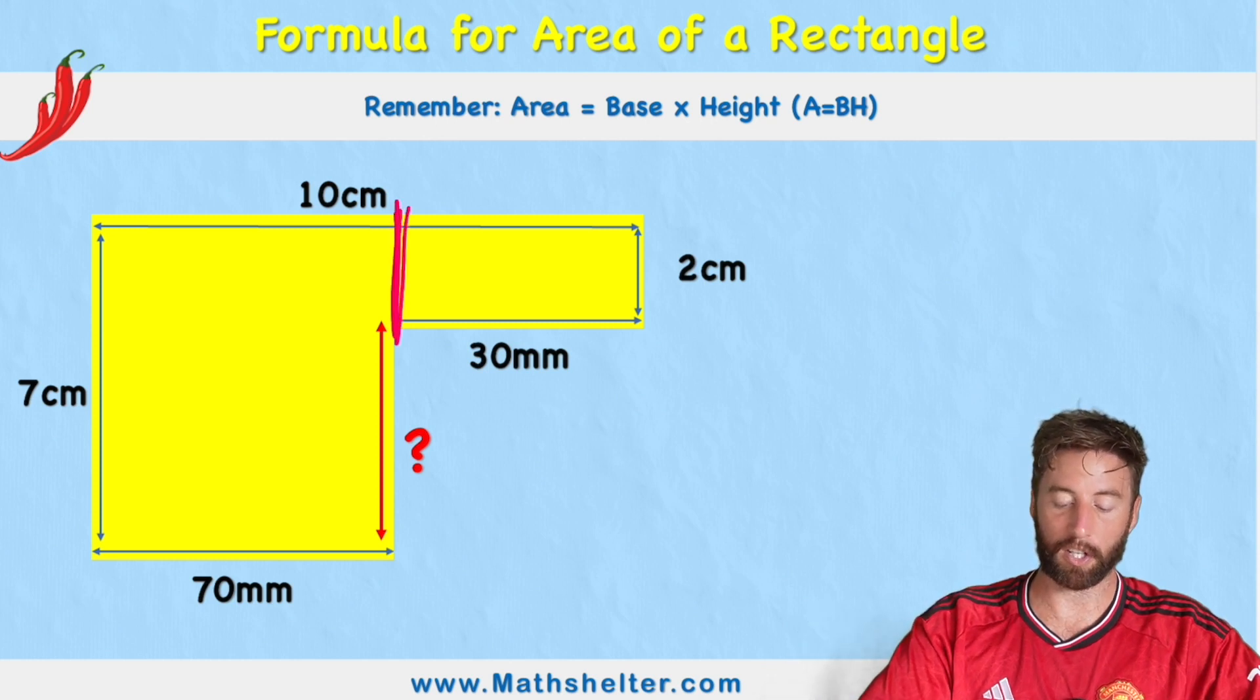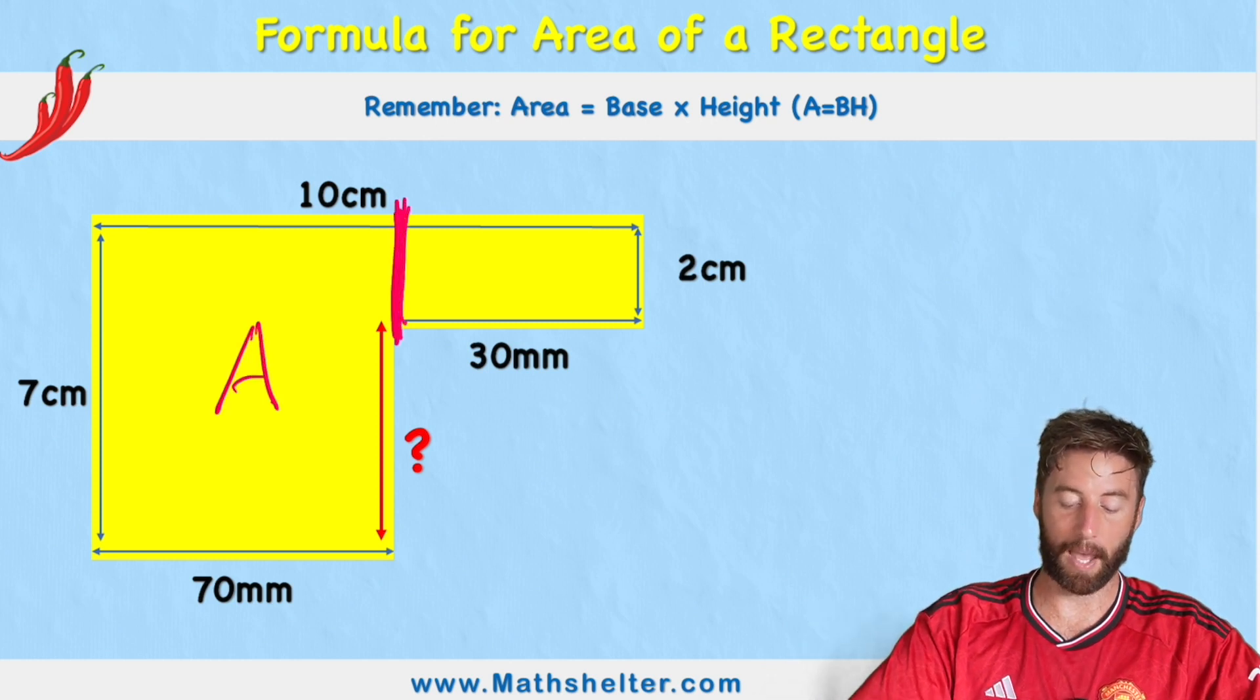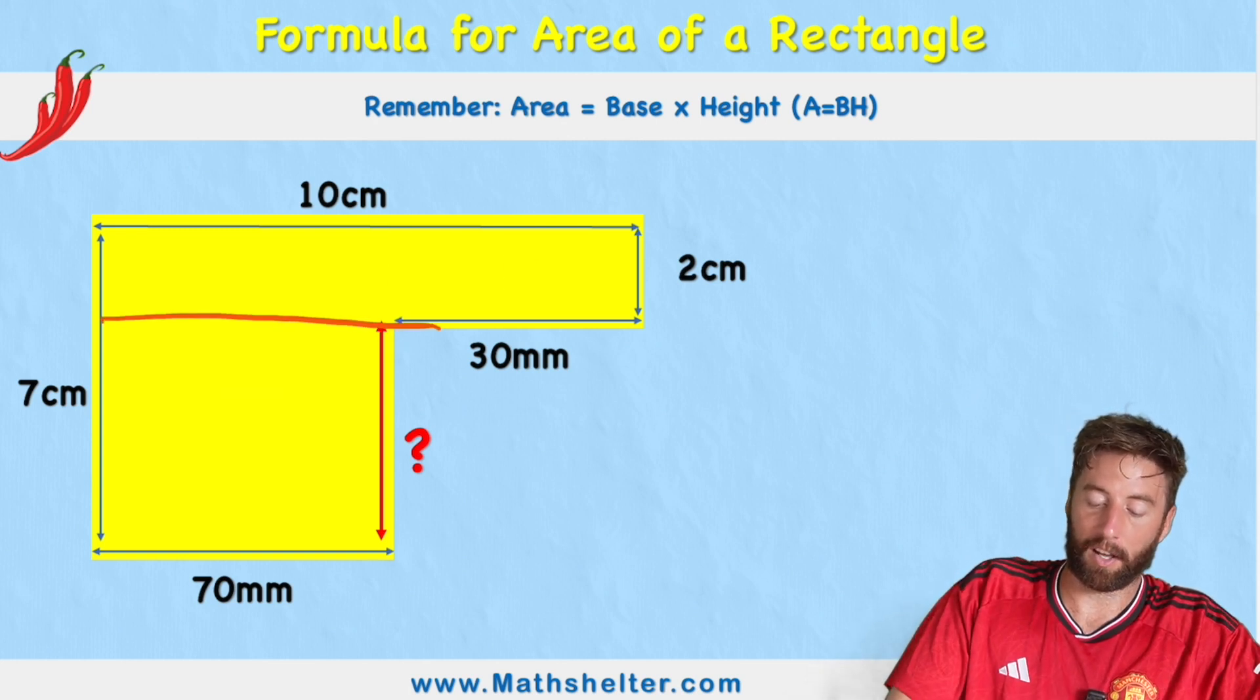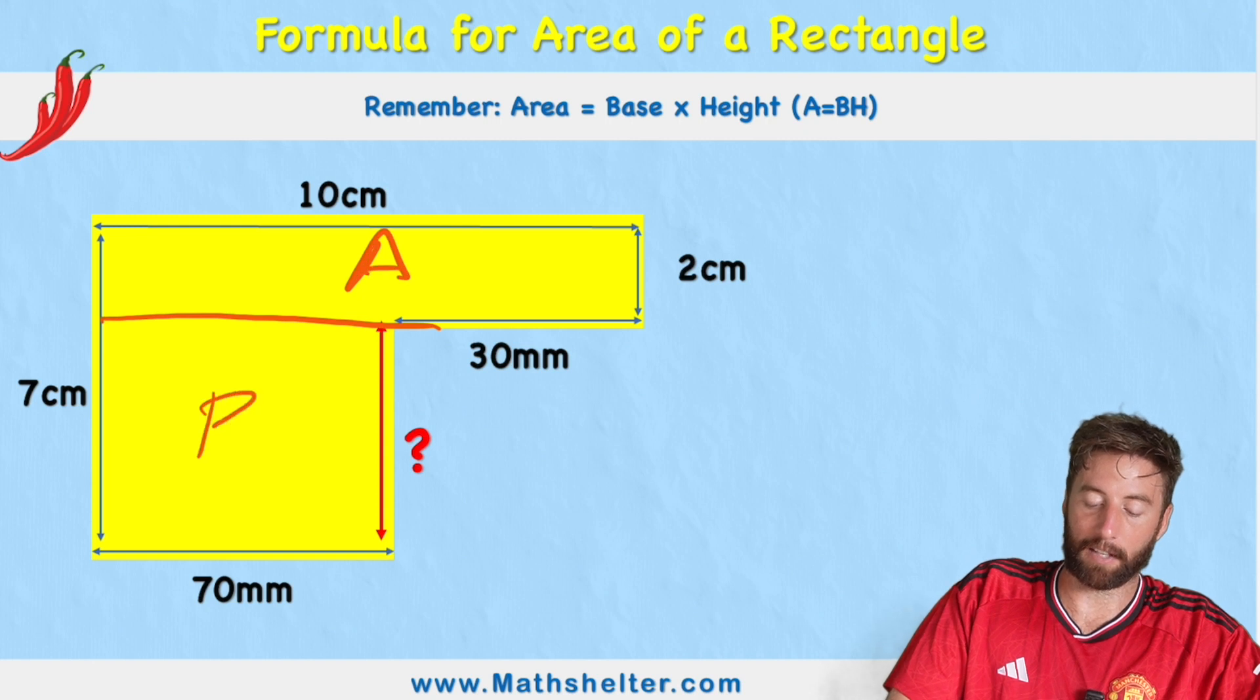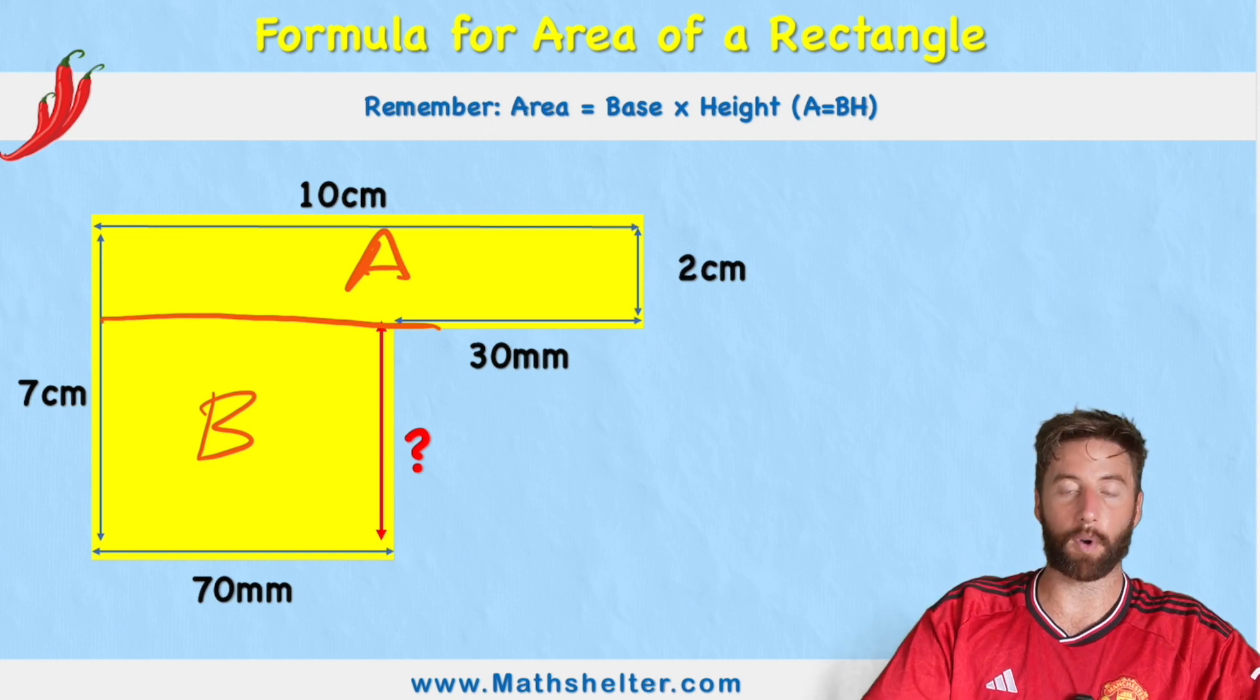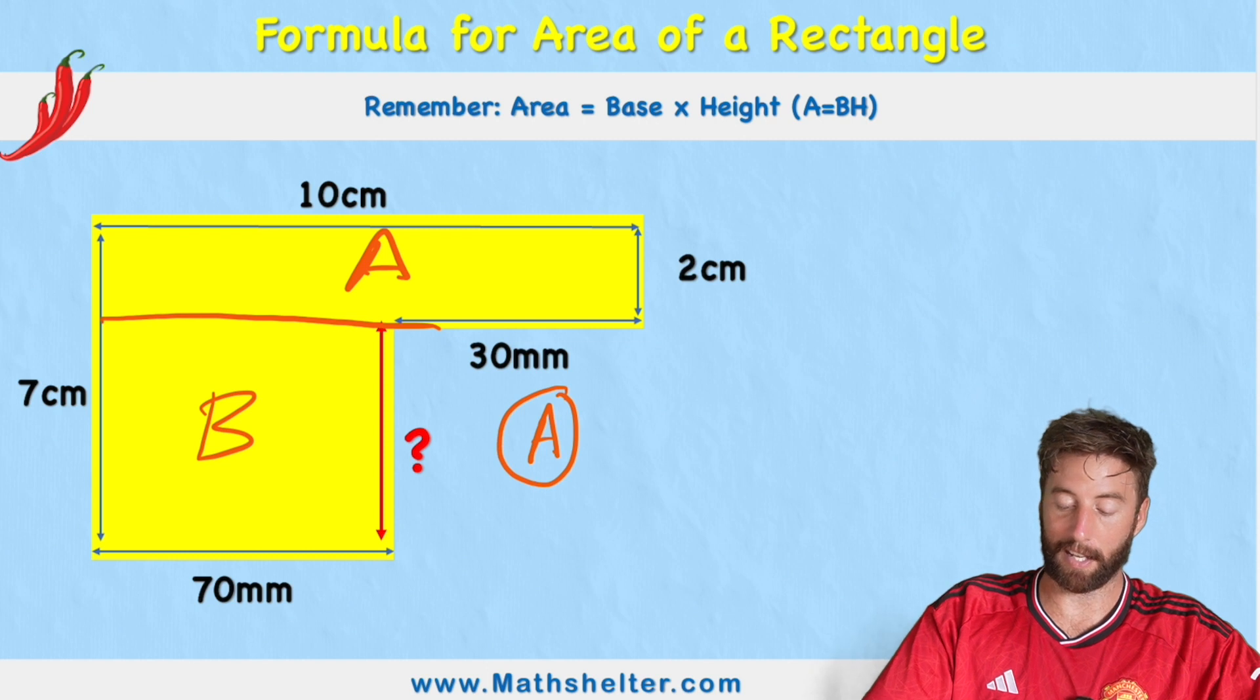So the first thing I need to do is I need to cut this back into its original two rectangles. So I could cut it just here and call this shape A and this B. Or I could cut it along here and call this A and this B. Either is fine. So let's leave it just like this. So first of all, I need to work out the area for shape A. So let's say shape A is here.